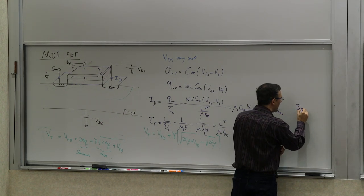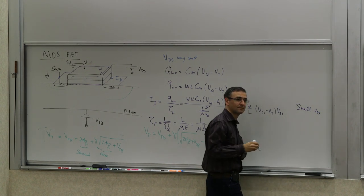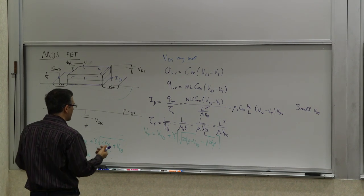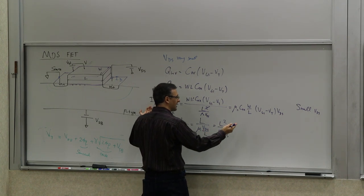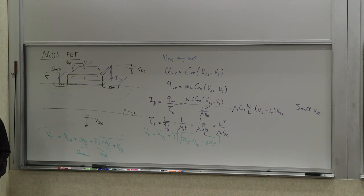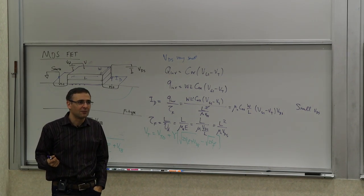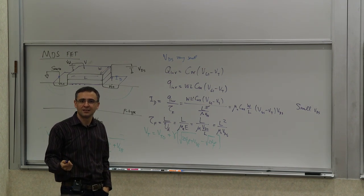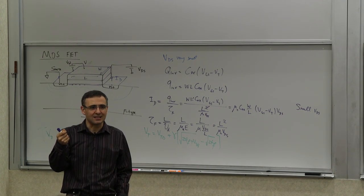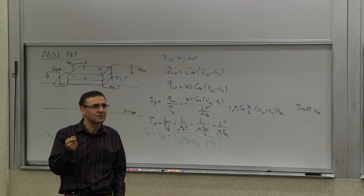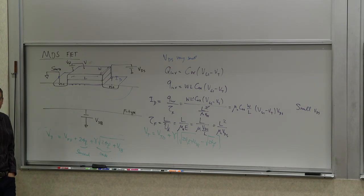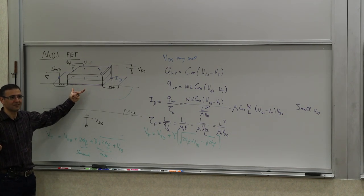This expression is for small VDS. Notice that if you look at Ohm's law, in this region the device looks like a resistor — current is proportional to VDS. But it's a resistor whose value is controlled by VGS. You can modulate this resistance. That's why it's called the transistor — trans-resistor. This is really the closest the device comes to what the name transistor suggests.